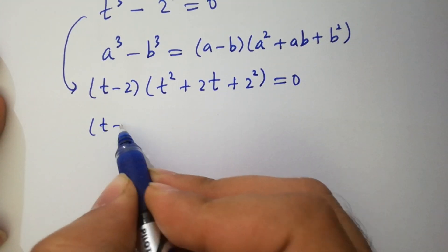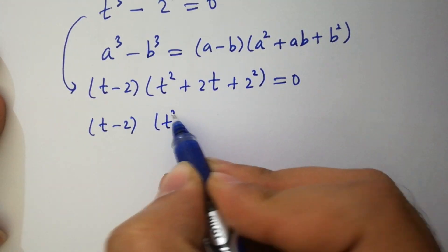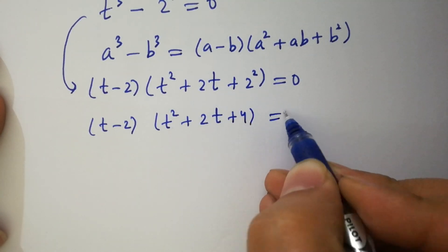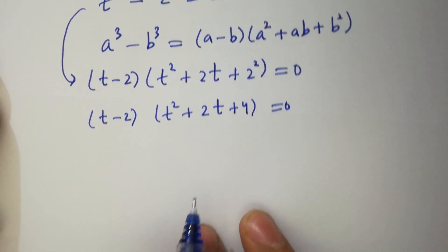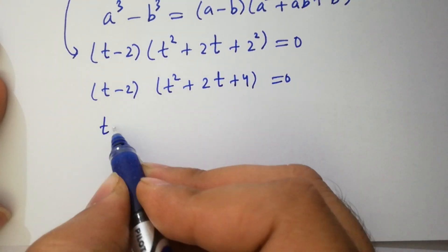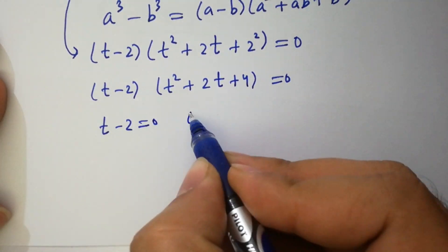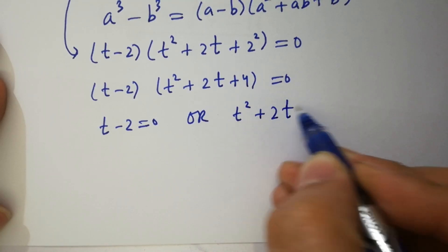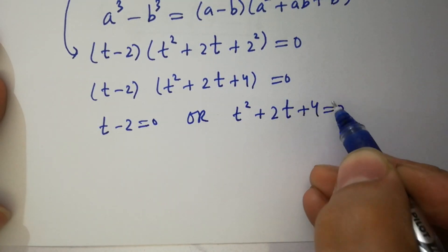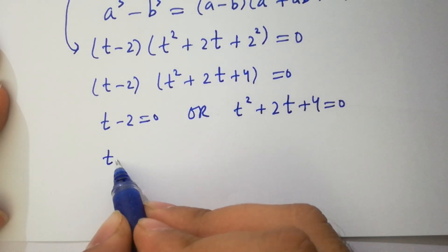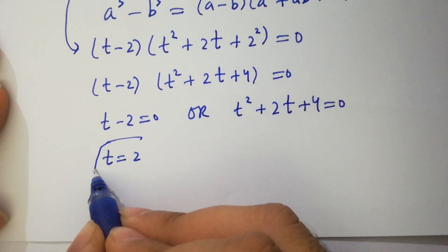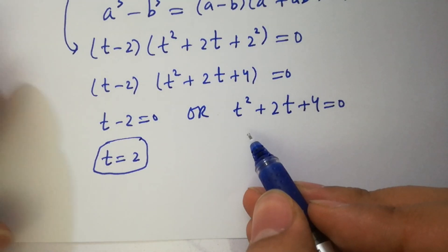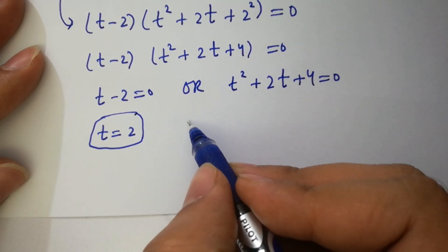So t minus 2 times t squared plus 2t plus 4 equals 0. Either t minus 2 equals 0, giving t equals 2, which is also a real solution, or t squared plus 2t plus 4 equals 0, which is a quadratic equation.